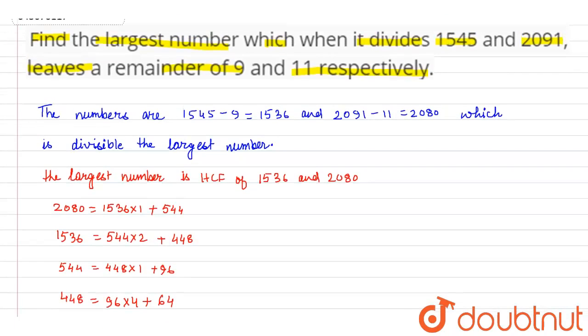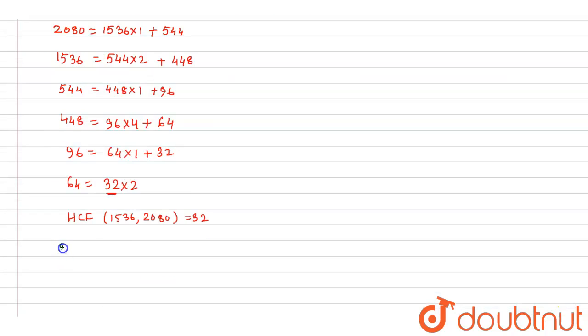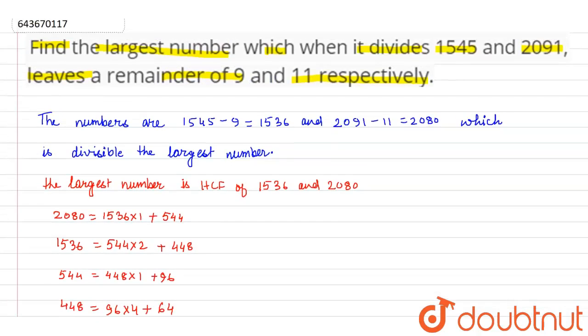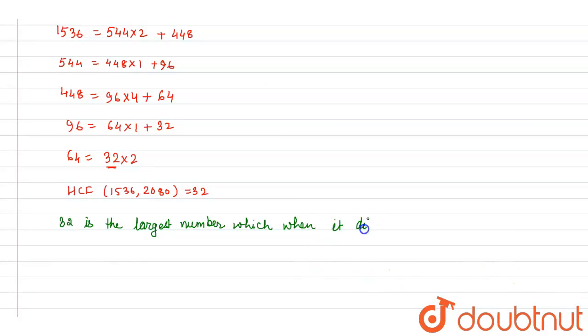That means 32 is the largest number which, when it divides 1545 and 2091, leaves remainder 9 and 11 respectively.